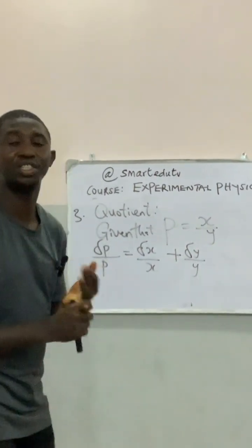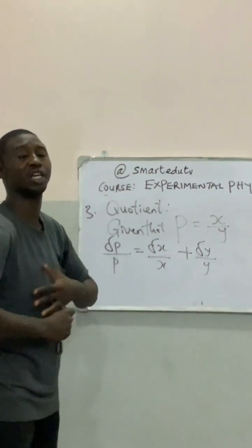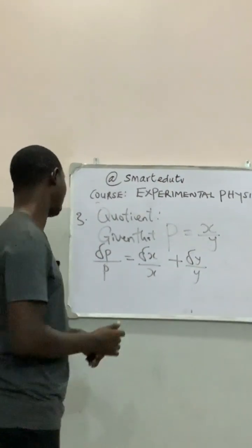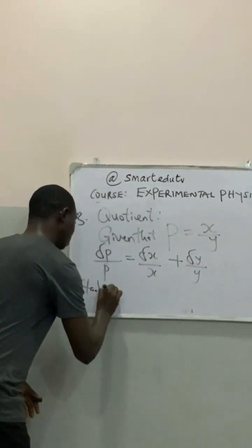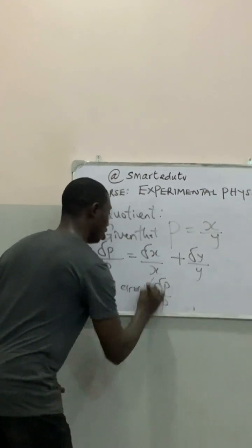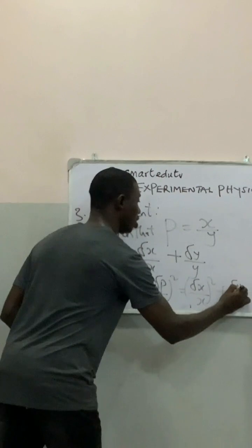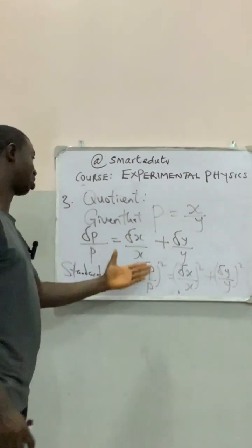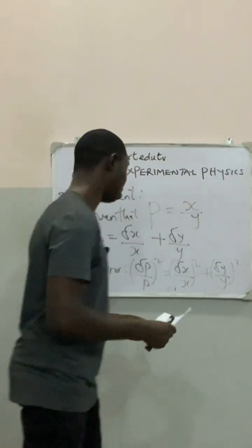Please take note: we don't subtract error, we don't divide error — errors are always added together, whether it is subtraction, multiplication, or division. The standard error in terms of quotient is also: (error in P / actual P)² equals (error in X / actual X)² plus (error in Y / actual Y)², which is similar to the multiplication case. Let's look at one or two examples under this so we understand clearly.